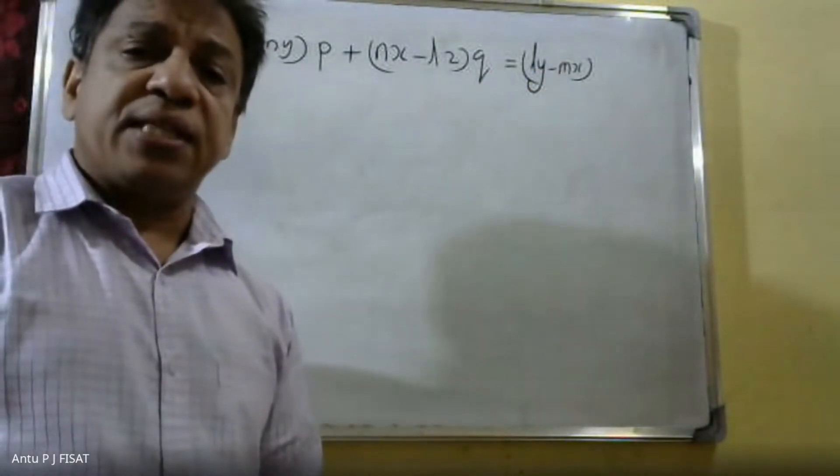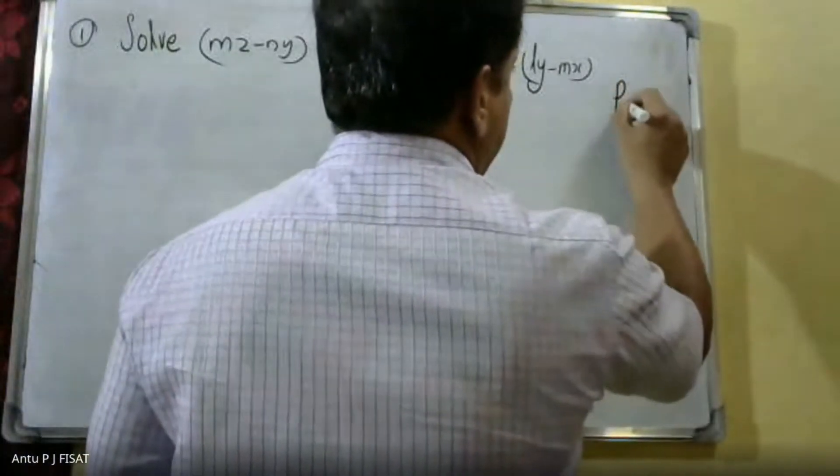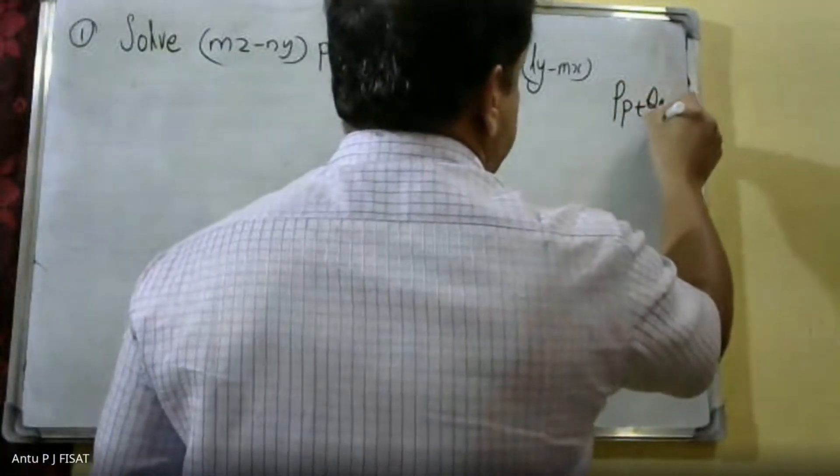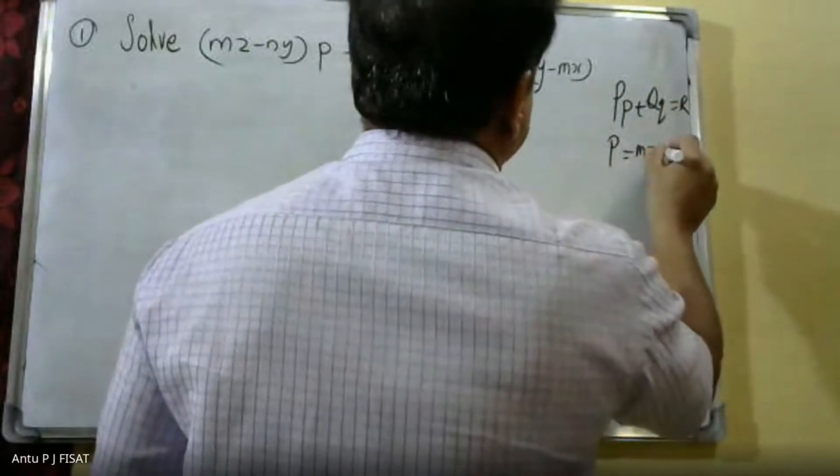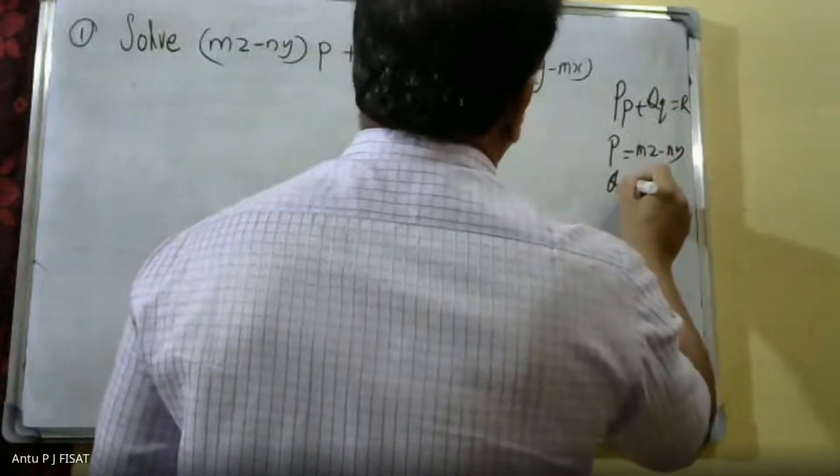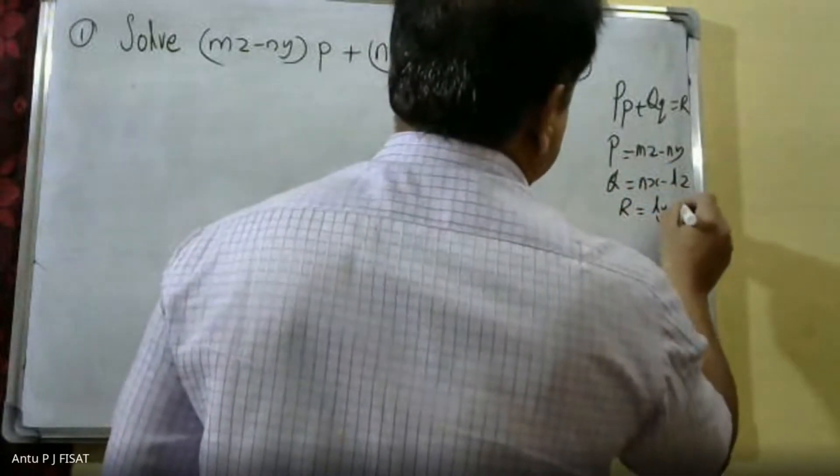First, we check whether this equation is a Lagrangian partial differential equation. The standard form is Pp + Qq = R. Then p = mz - ny, q = nx - lz, and r = ly - mx.